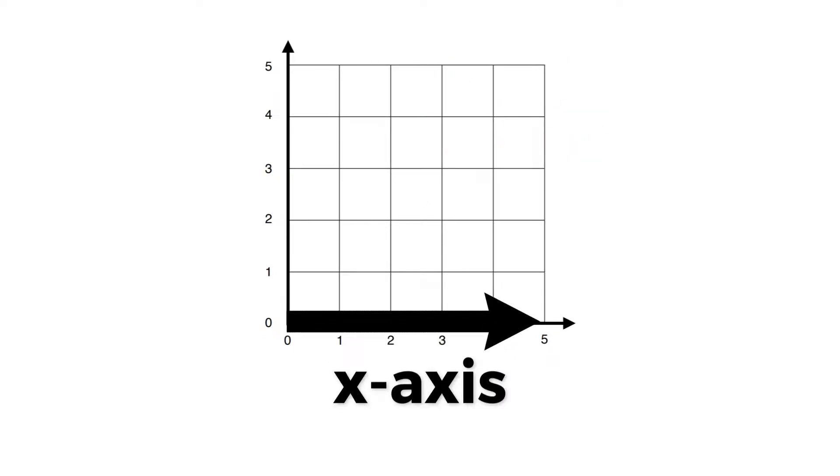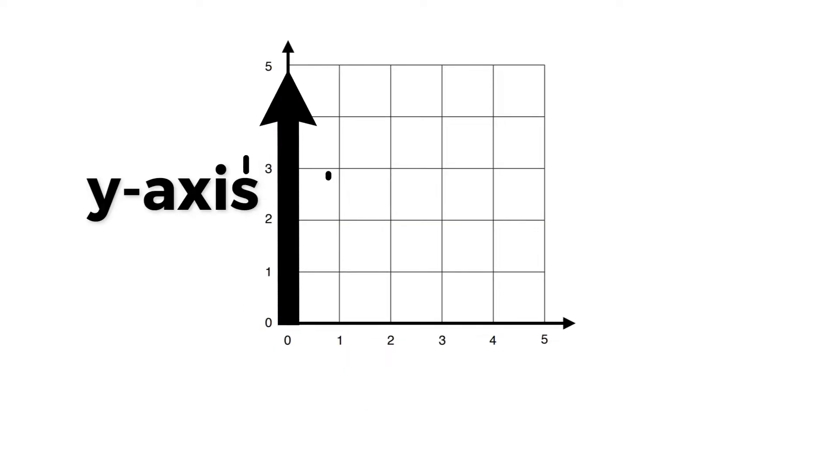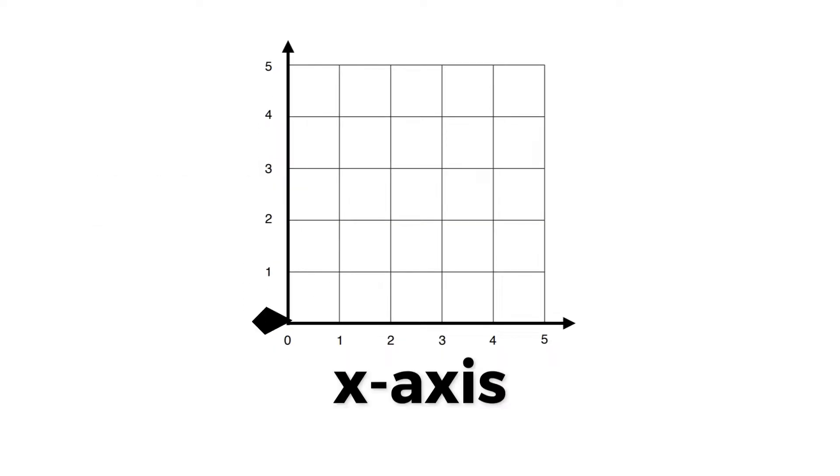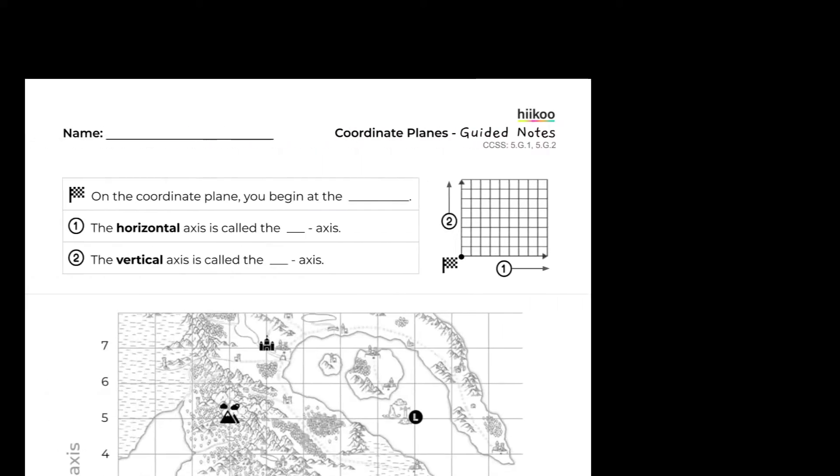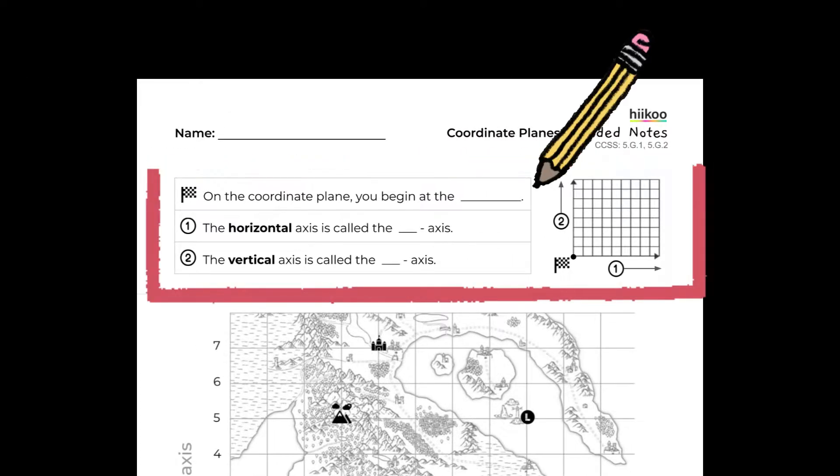Then there is the X-axis and the Y-axis. The X-axis is the horizontal number line that goes left to right, and the Y-axis is the vertical number line that goes up and down. At the top of your guided notes, correctly label the three parts.